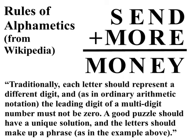What's an alphametic? Let's see what Wikipedia has to say. Traditionally, each letter should represent a different digit, and as in ordinary arithmetic notation, the leading digit of a multi-digit number must not be zero.